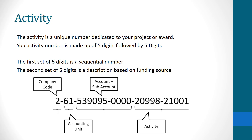The activity is a unique number dedicated to your project or award. Your activity number is made up of five digits followed by five digits. The first set of five digits is a sequential number, and the second set is a description based on your funding source. Your research financial analyst will provide this information if you are requesting a new activity.